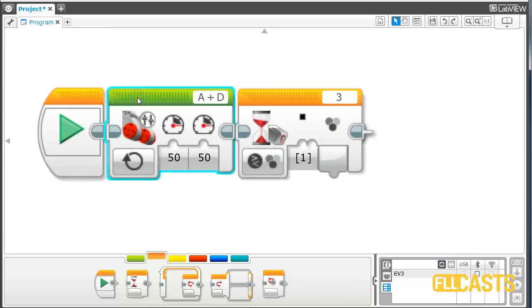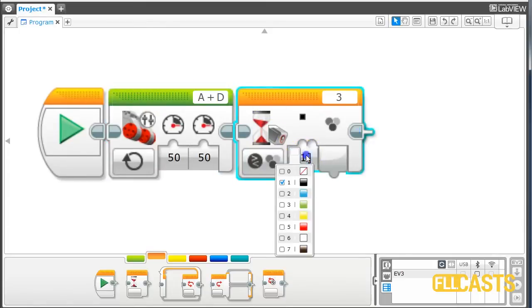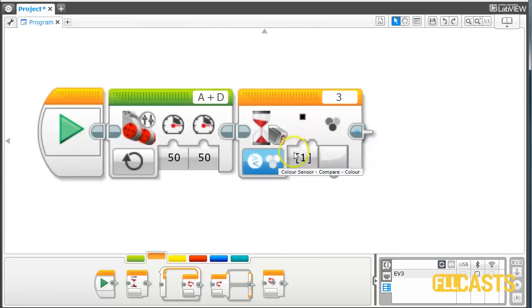So move forward until the color sensor detects a color that is black. You can see here the different colors that we can select from and we want to detect black, because our line is black.